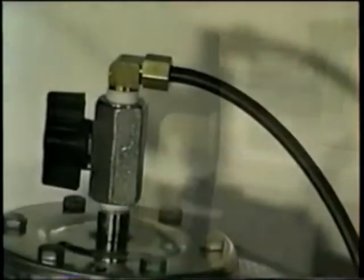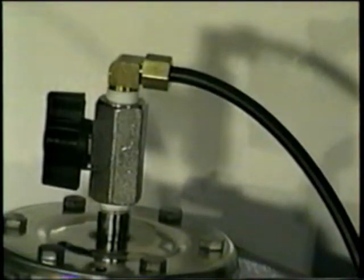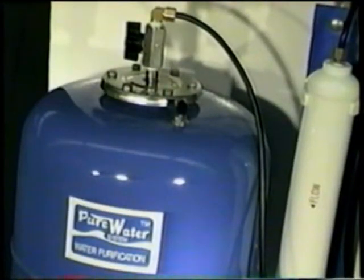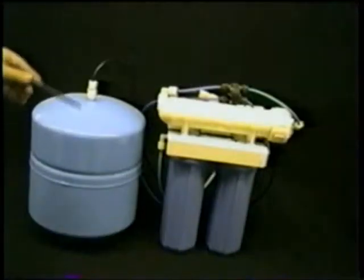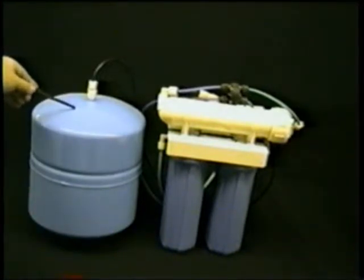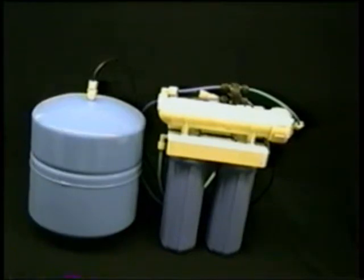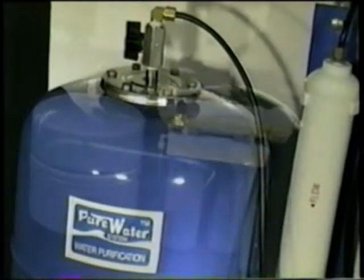Pure Water Systems tanks feature a manual shutoff valve so you can shut off the pressurized water inside the tank when it comes time to change the filters. Generic systems like this one do not have a manual shutoff valve on the tank. There's no way to shut off the pressurized water inside the tank on the generic system. This can be very frustrating and messy when you try to change the filters.